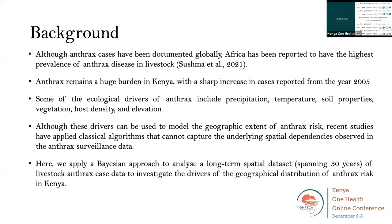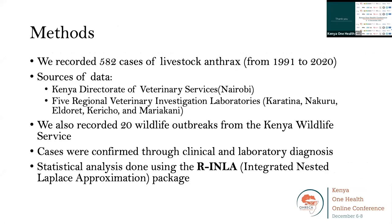We apply a Bayesian approach to analyze a long-term spatial dataset spanning 30 years of livestock anthrax case data to investigate the drivers of the geographical distribution of anthrax risk across Kenya. We recorded 582 cases of livestock anthrax from 1991 to 2020, obtained from the Kenya Directorate of Veterinary Services in Nairobi and five regional veterinary investigation laboratories. We also recorded 20 wildlife outbreaks from the Kenya Wildlife Service, confirmed through clinical and laboratory diagnosis. Statistical analysis was done using the R-INLA package, which stands for Integrated Nested Laplace Approximation.